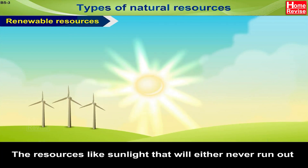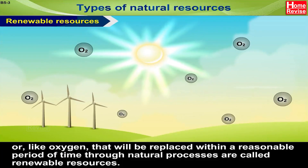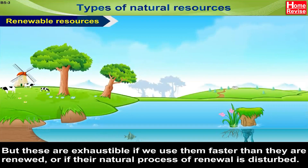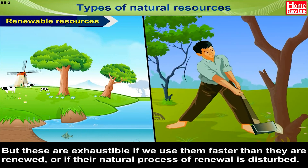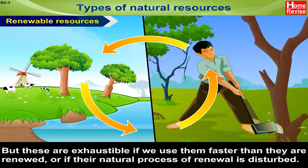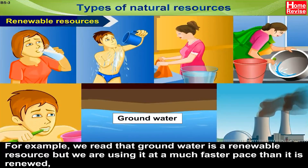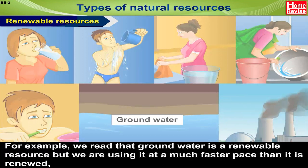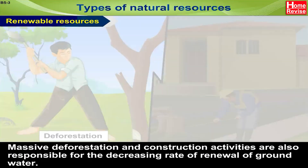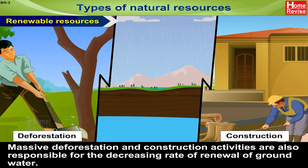Resources like sunlight that will never run out, or like oxygen that will be replaced within a reasonable period of time through natural processes, are called renewable resources. But these are also exhaustible if we use them faster than they are renewed or if their natural process of renewal is disturbed. For example, groundwater is a renewable resource, but we are using it at a much faster pace than it is renewed, leading to lowering of the water table and scarcity of water in some areas. Massive deforestation and construction activities are also responsible for the decreasing rate of renewal of groundwater.